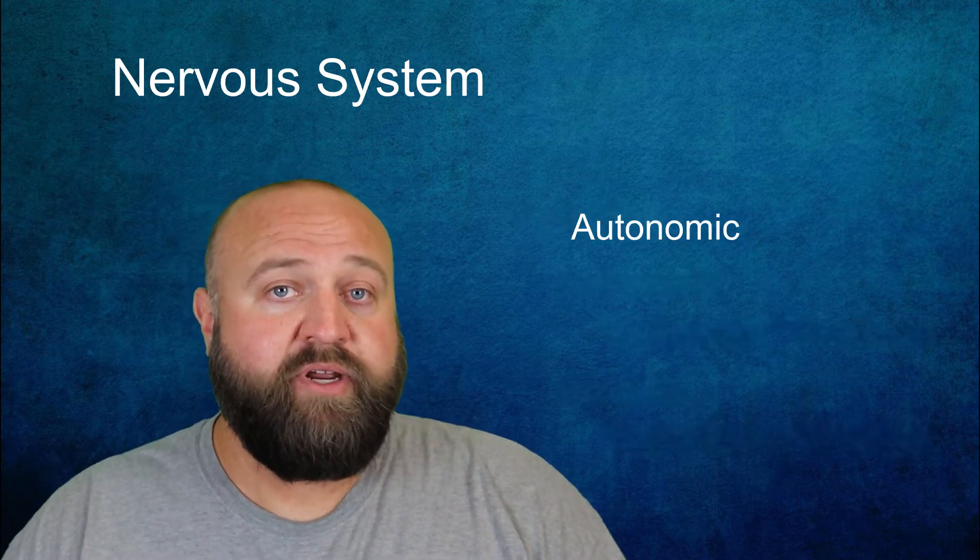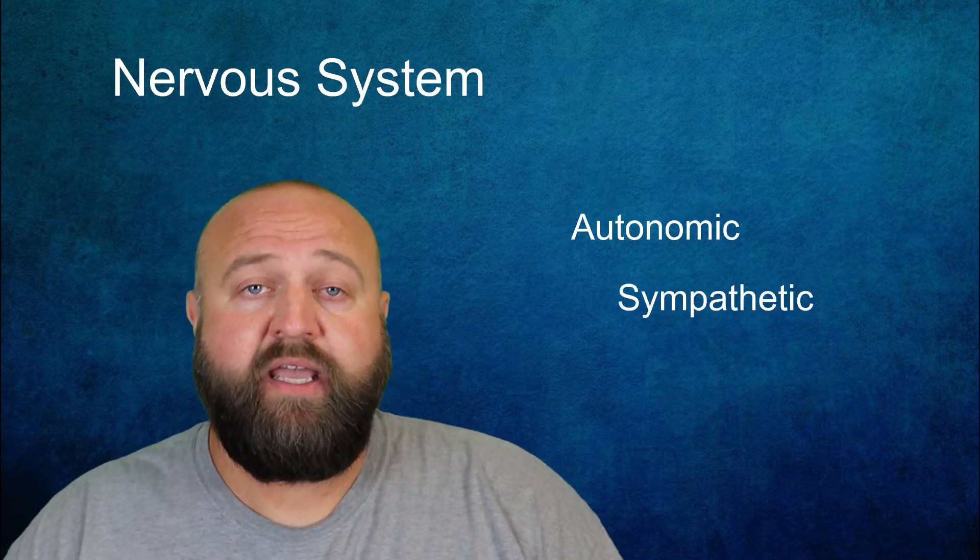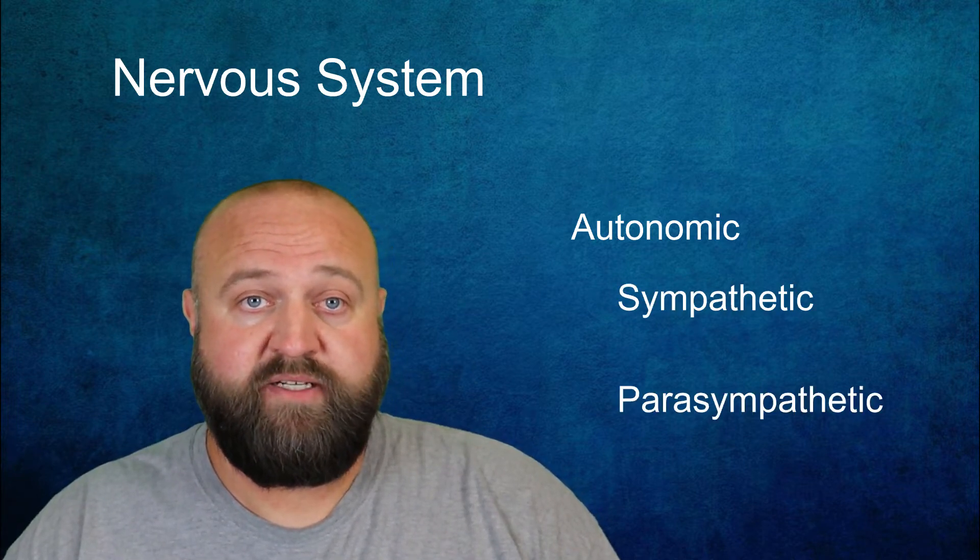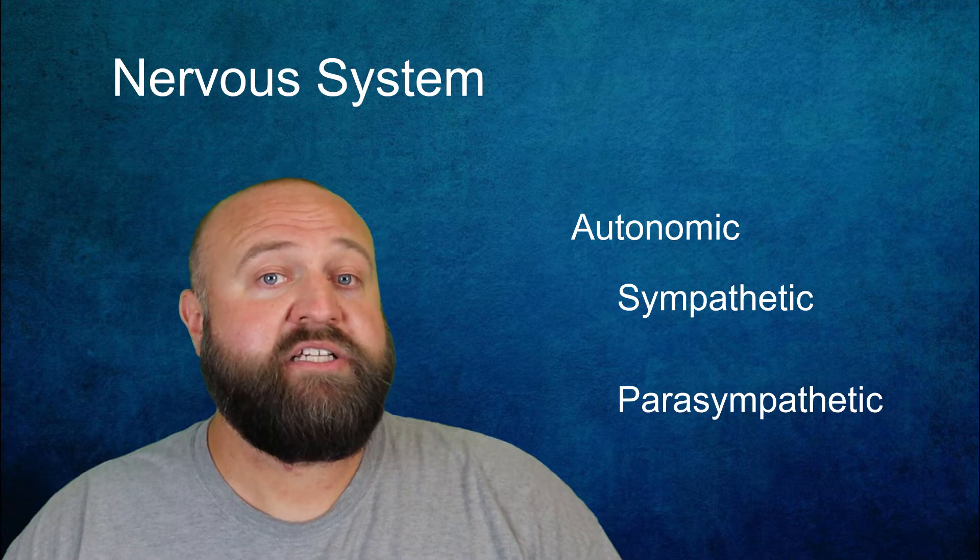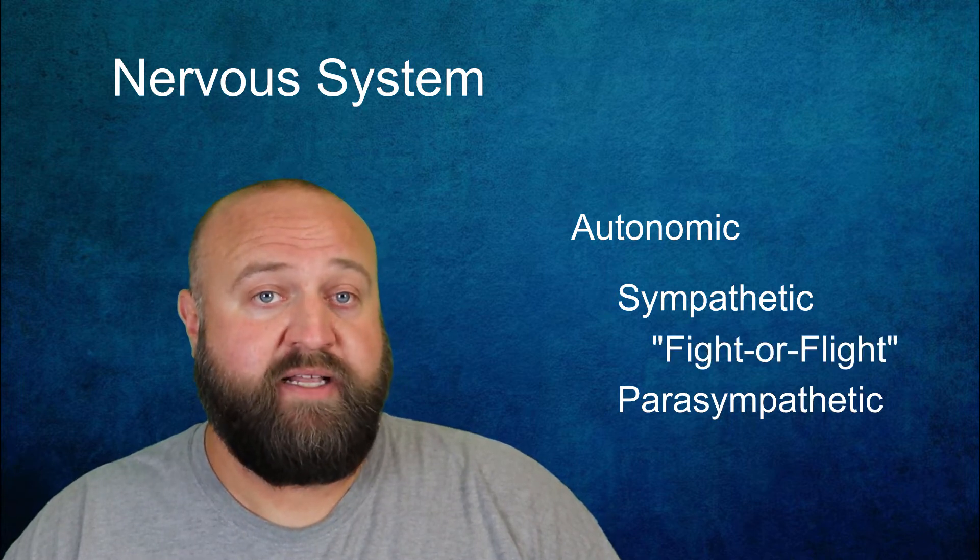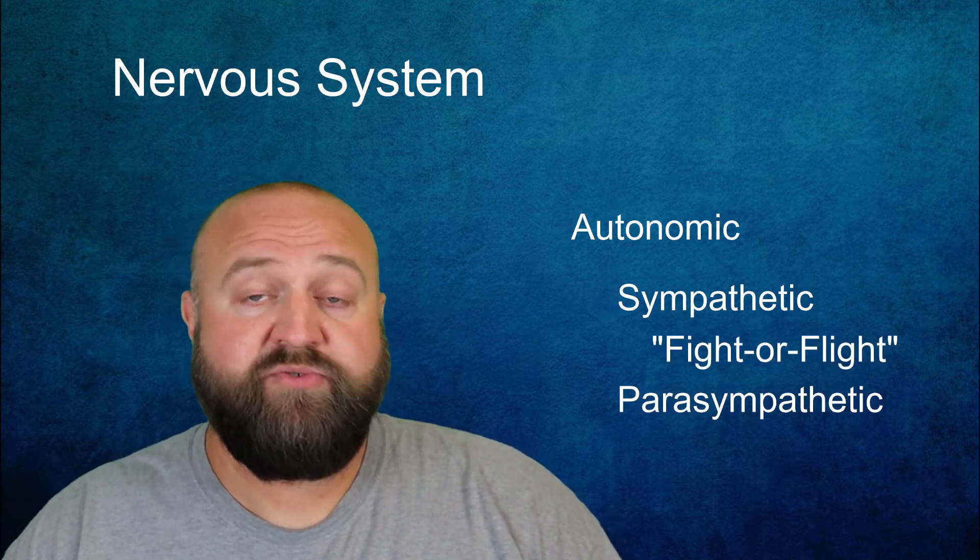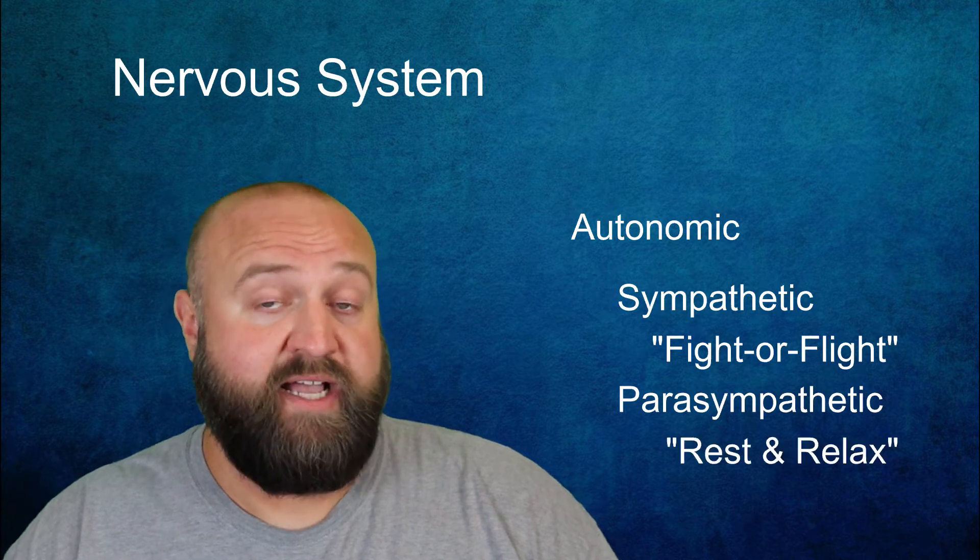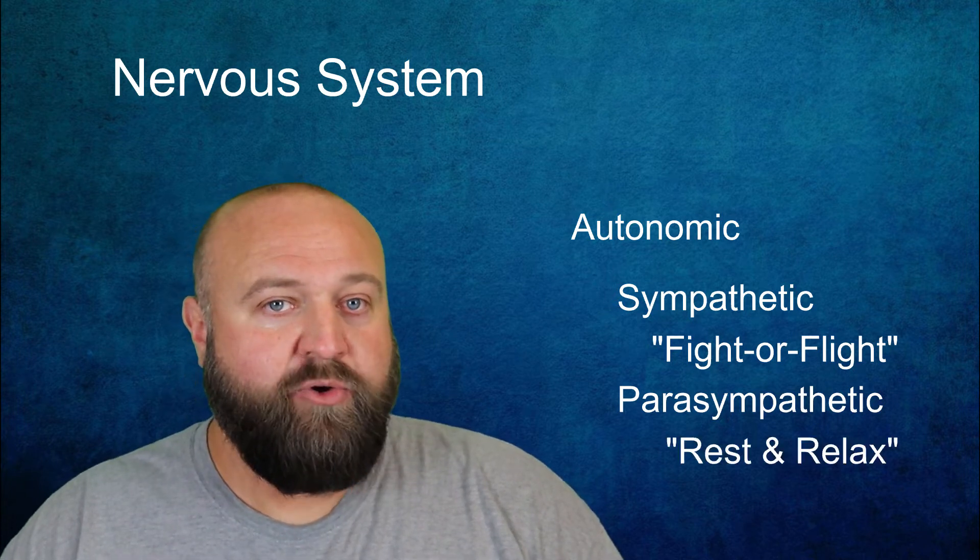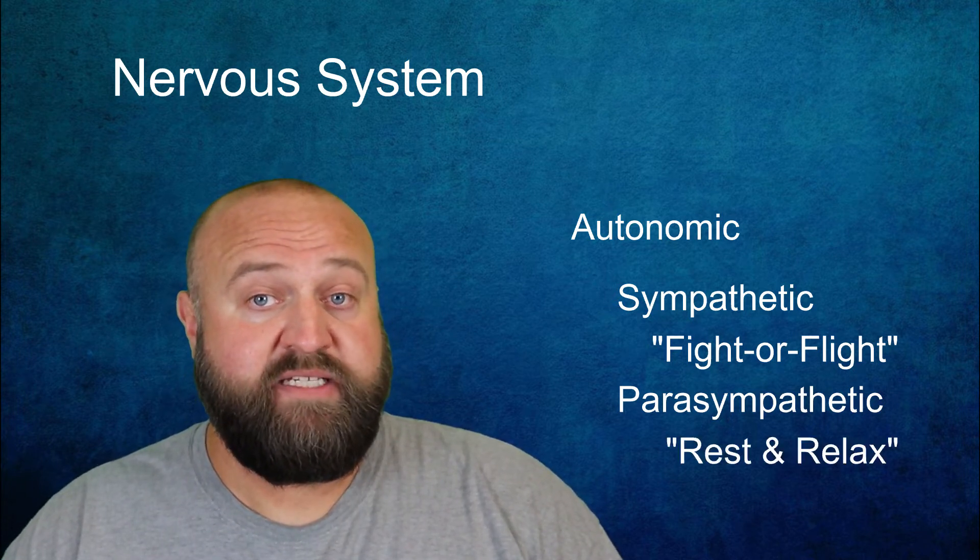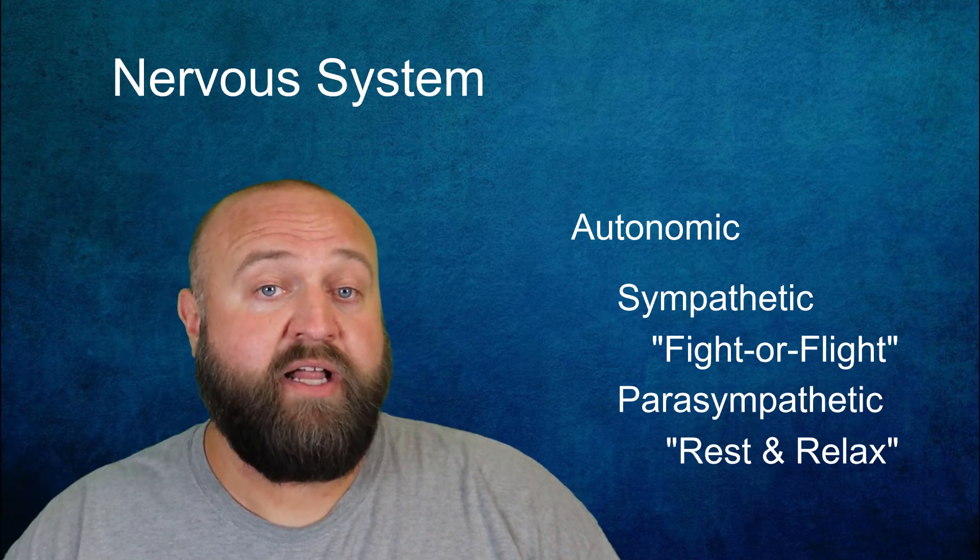The autonomic nervous system is further subdivided into the sympathetic and parasympathetic nervous systems. The sympathetic is responsible for your body's fight or flight response and the parasympathetic is responsible for your body's rest and relaxed response. I go into a little greater detail about these subsystems and your body's fight or flight response in another video.